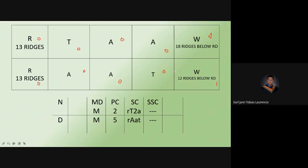Now let's go to the major division. The major division shows MM. What does M mean? Medium. How did it become medium? We start by counting the ridges of the left thumb. The ridge count of the left thumb is 13. The right thumb is also 13. The interpretation of the right thumb depends on the interpretation of the left thumb, so we prioritize the left thumb.